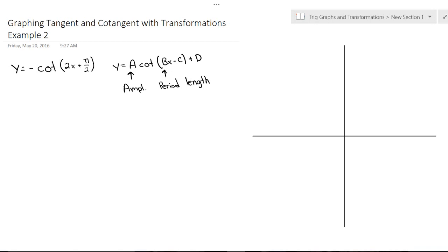Because it's a cotangent, it's pi divided by absolute value of b. And then I got our c, which helps us figure out our phase, also known as our horizontal shift.